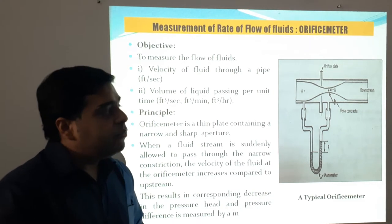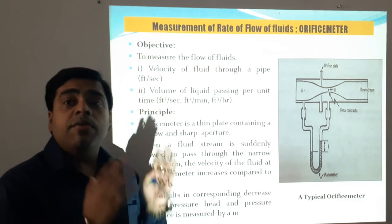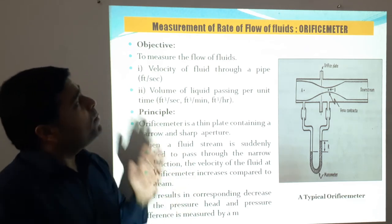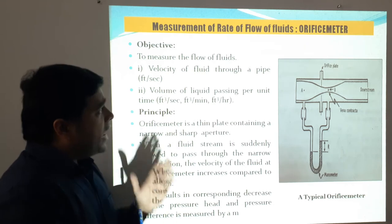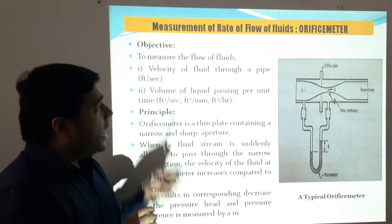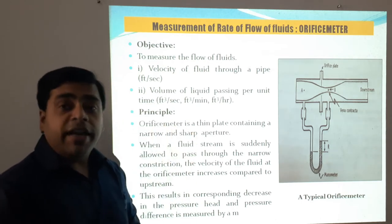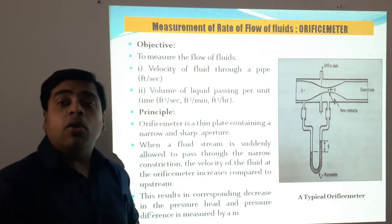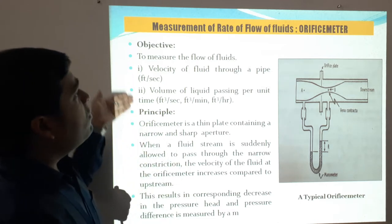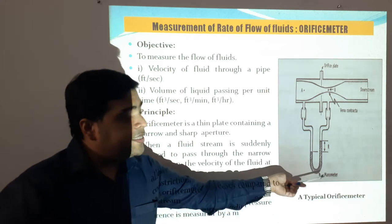This is the typical diagram of an orifice meter — a very important diagram, quite routinely used to measure the rate of flow of fluids. The objective is to measure the velocity of fluid flow through a pipe in feet per second, and to determine the volume of liquid passing per unit time — in cubic feet per second, per minute, or per hour. The orifice meter is always paired with a manometer.